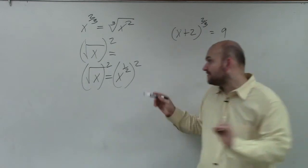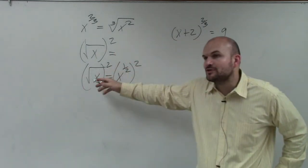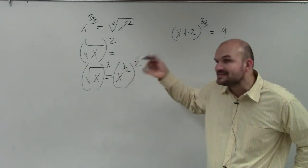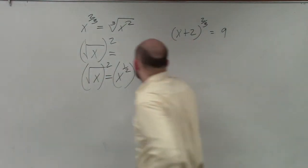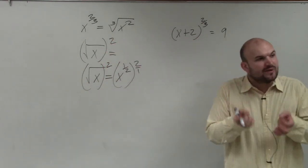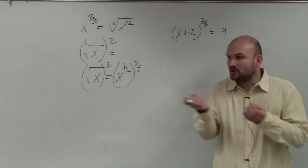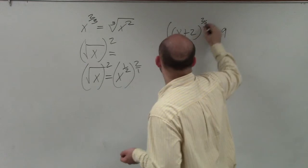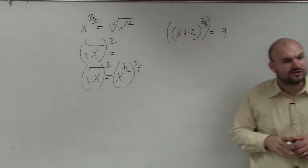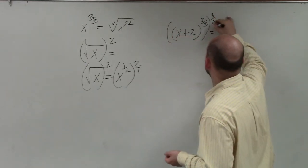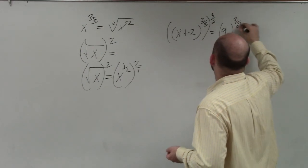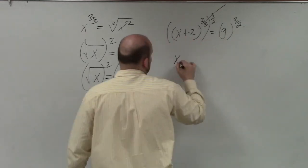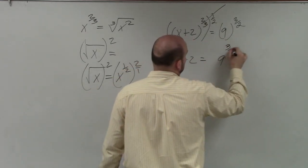What I want you guys to notice is: when I square the square root, that undoes it. When I square the 1/2 power, that undoes that as well. The relationship to see is if you raise a power to its reciprocal, it's going to equal 1. So I just need to raise this to the reciprocal power. The reciprocal of 2/3 is 3/2. Any time you raise a number to its reciprocal, it goes to 1 — so I'm left with x plus 2 equals 9 to the 3/2.